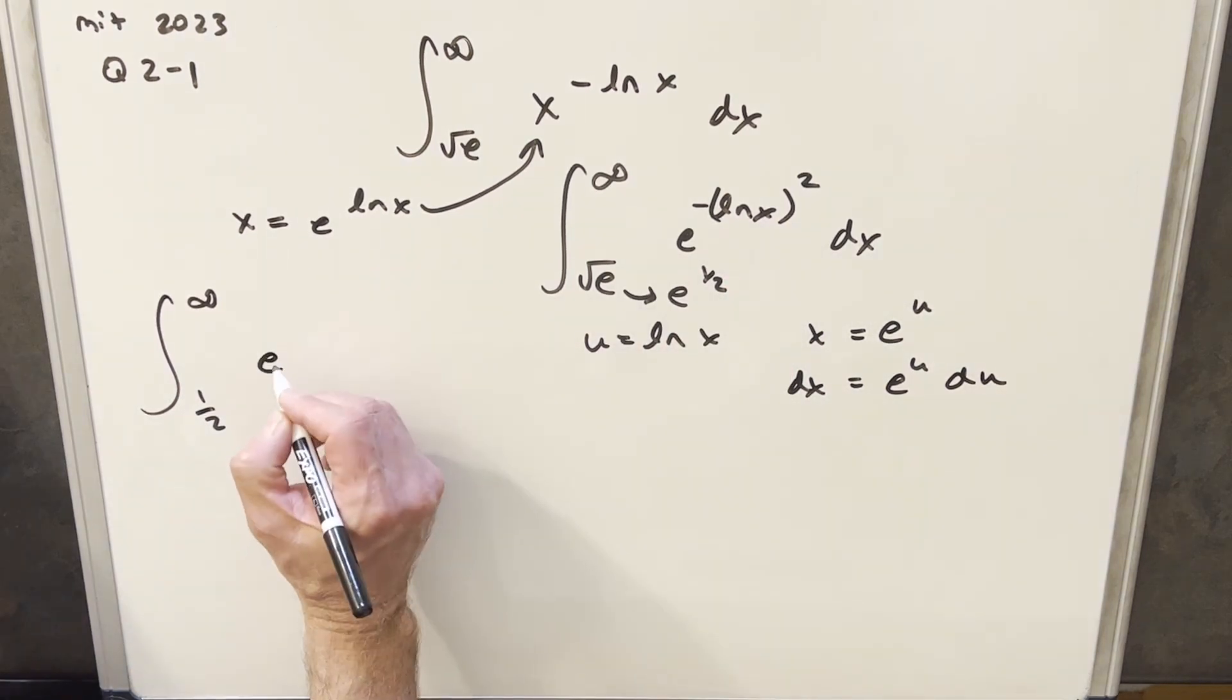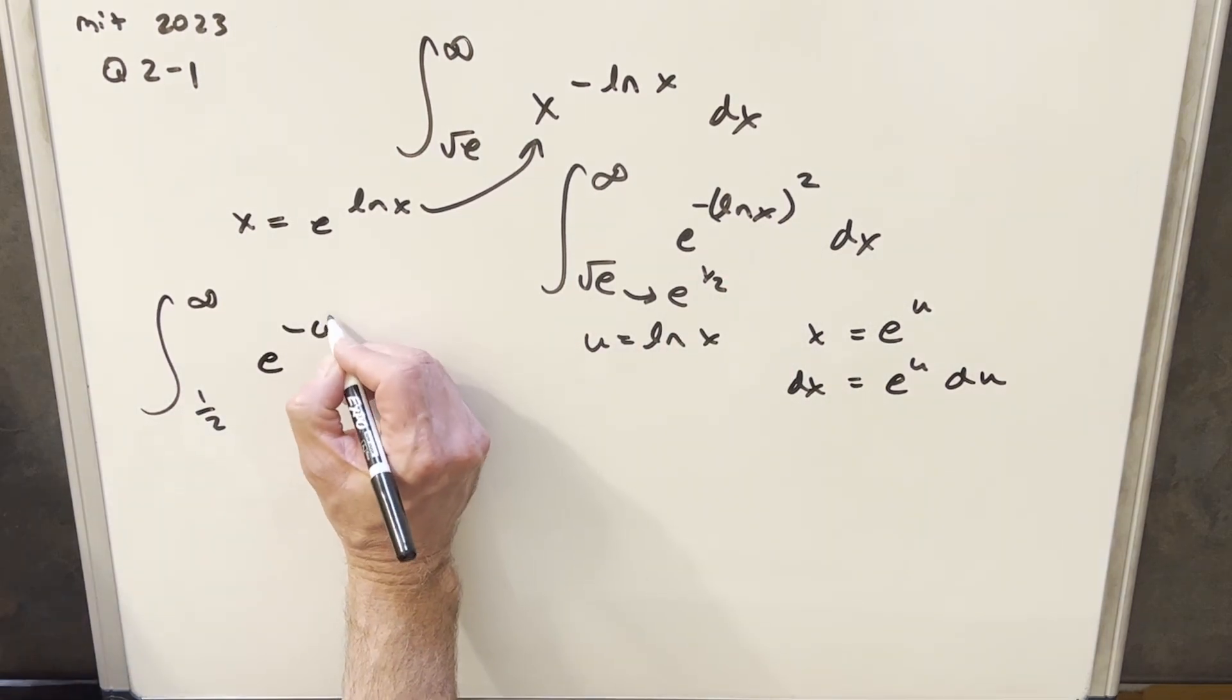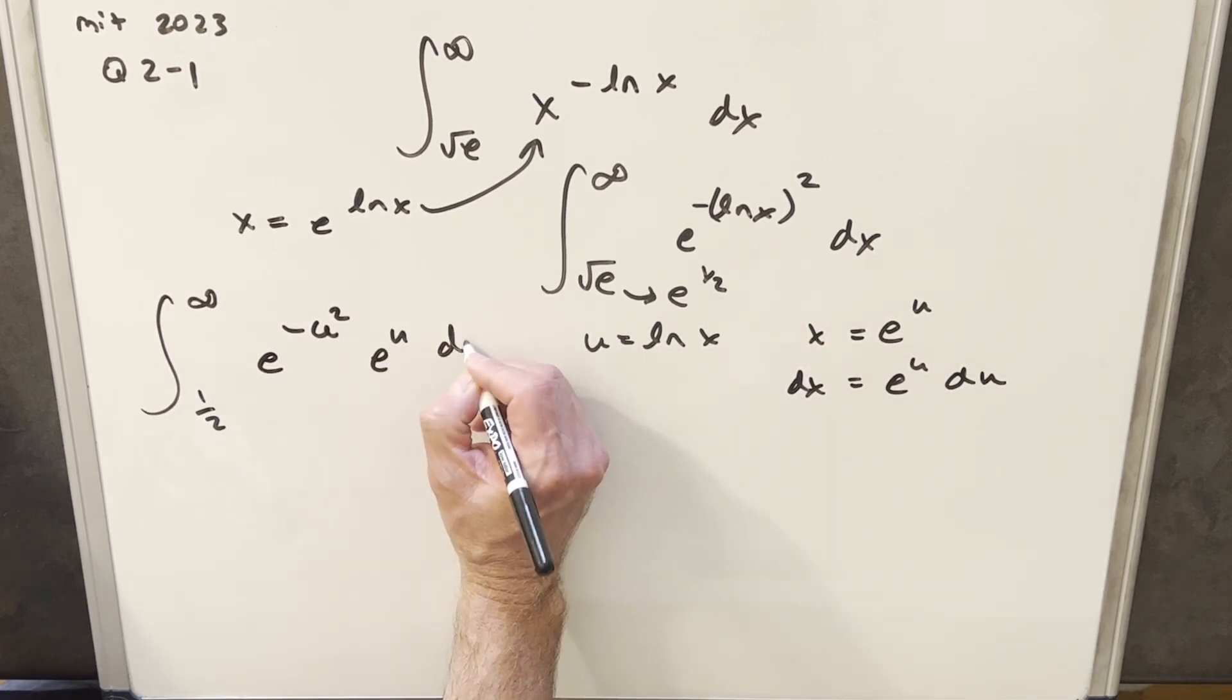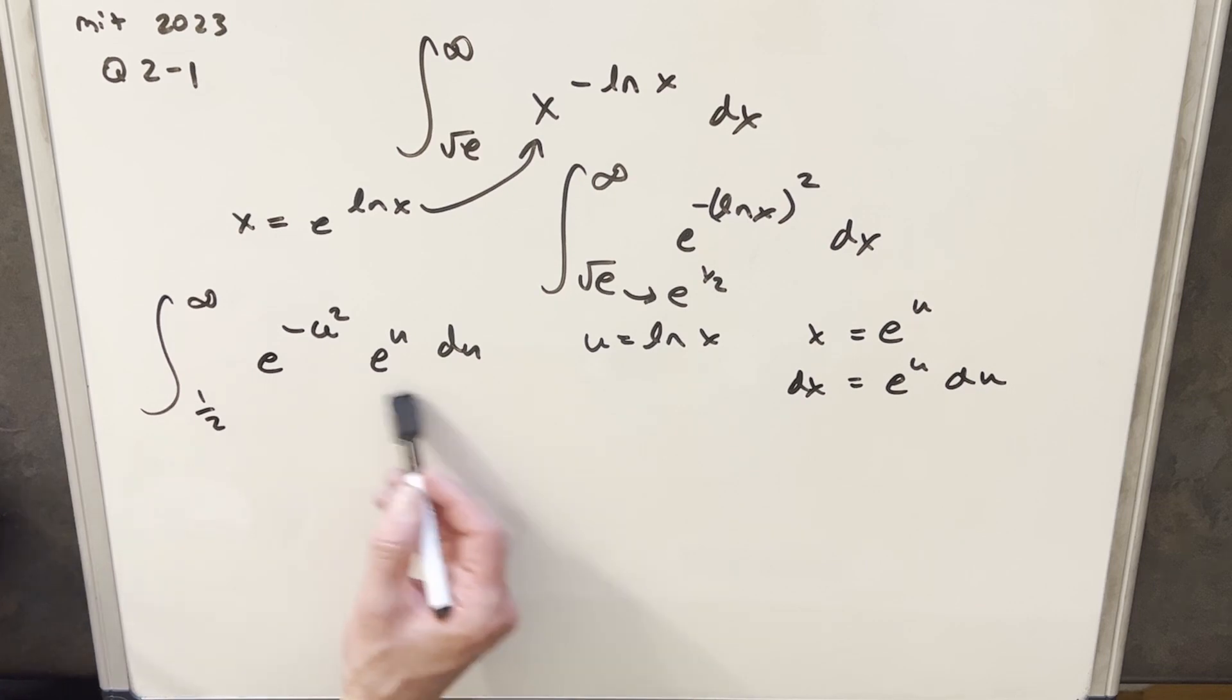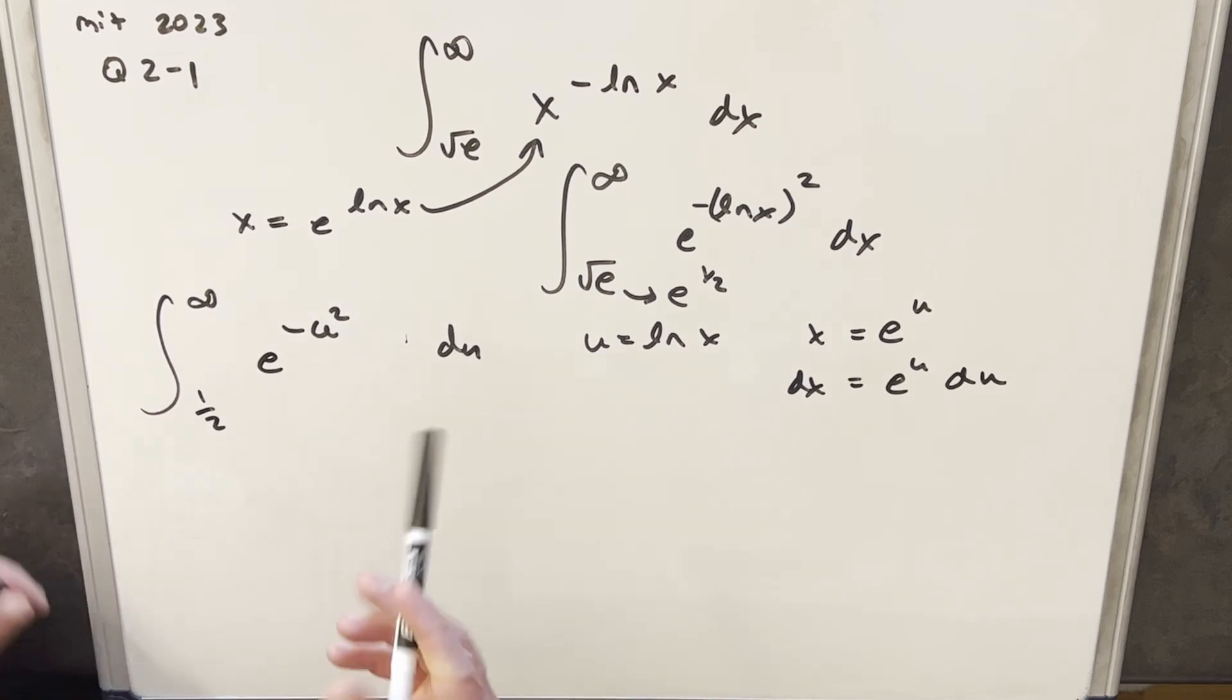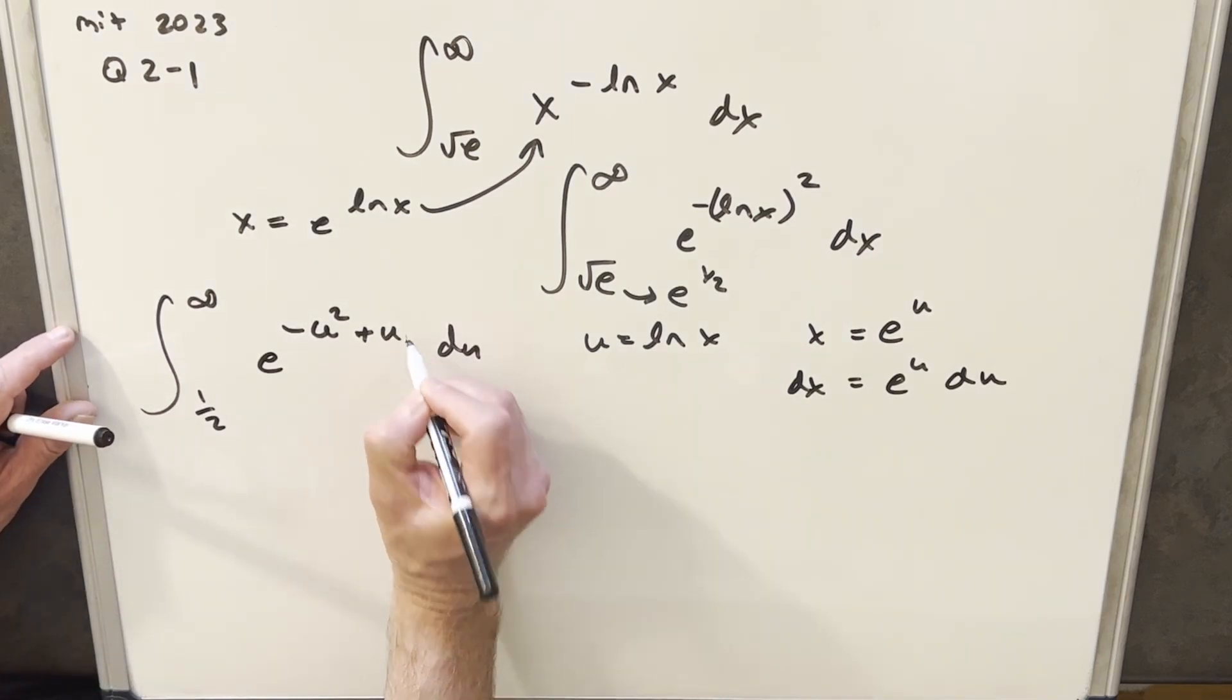Then we'll substitute here, so we're going to have e to the minus u squared. Then for dx, it's just going to be e to the u du. But then by exponent properties here, I can add the exponents, because we have the same base. So I'm just going to rewrite this as e to the minus u squared plus u.